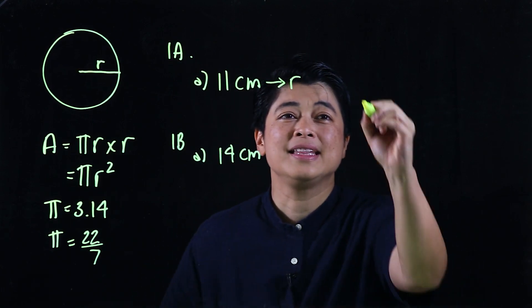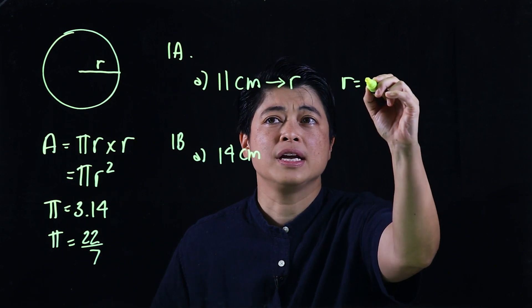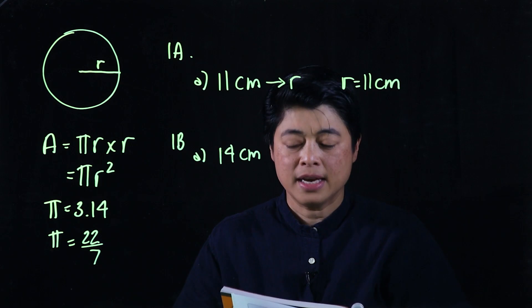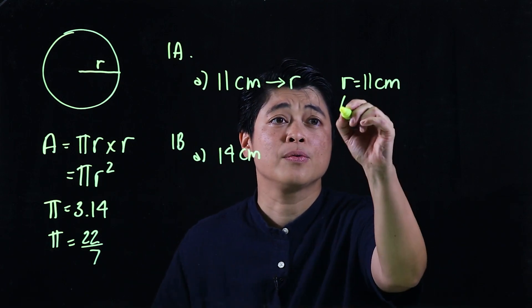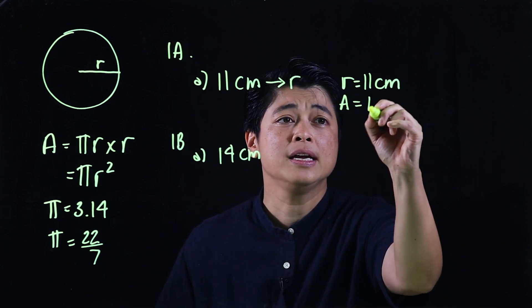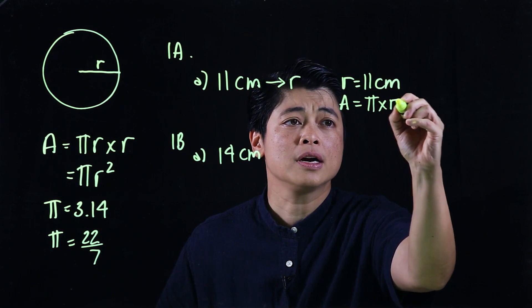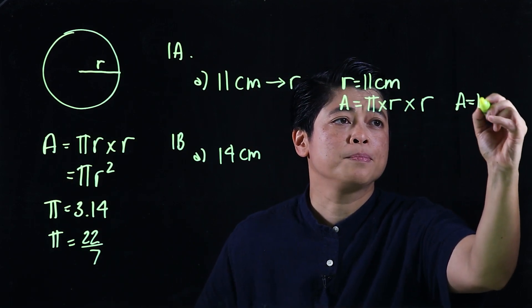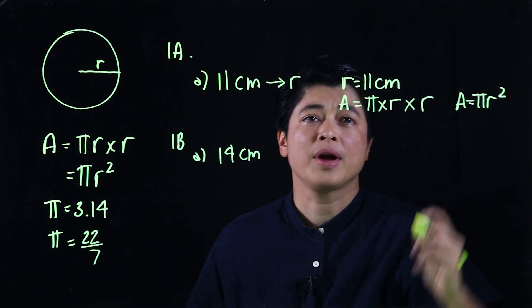So again, ideal to write down the given. So radius is 11 centimeters. Then it wants the area, so if it wants the area it's pi times r times r, or area is pi r squared.